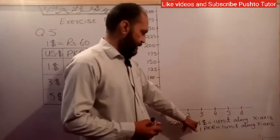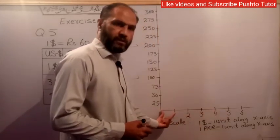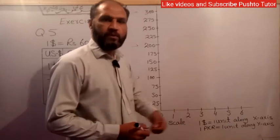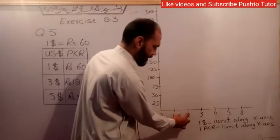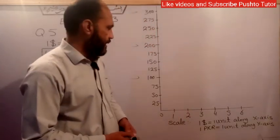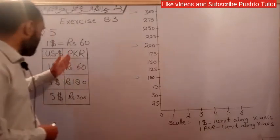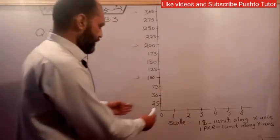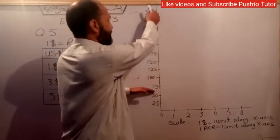We have the x-axis representing dollars and the y-axis representing rupees. On the x-axis, 1 unit equals $1. On the y-axis, the maximum is 300 rupees. We set the scale accordingly with units of 1 and 2 on both axes.